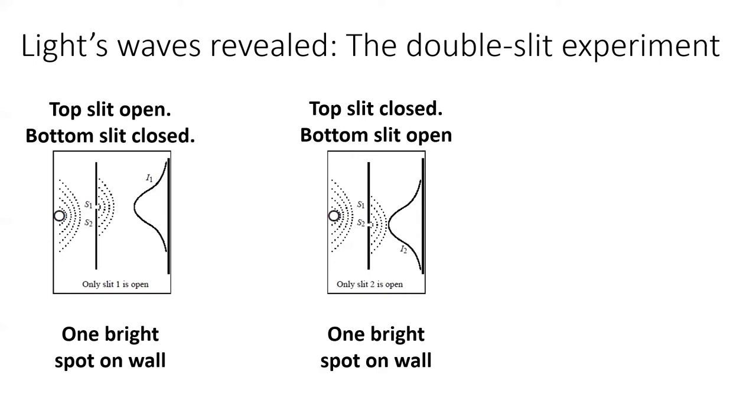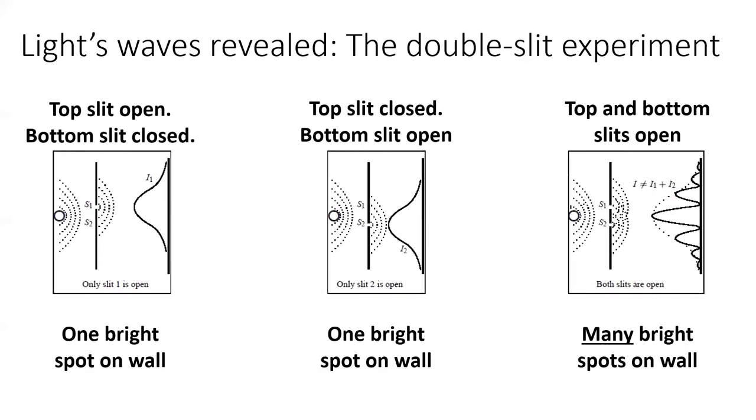But the really bizarre thing happens when we open both slits. We see a pattern of alternating light, then dark, then light, then dark lines. There are even places where the light was brighter when we had only one slit open. How can this be?